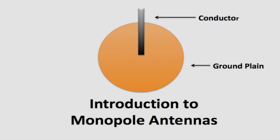Welcome. In today's video, we are going to dive into the fascinating world of monopole antennas. Whether you are a beginner or looking to deepen your knowledge, you are in the right place. We'll explore the key components that make up a monopole antenna and break down the essential concepts like impedance matching, current, voltage, electric fields, magnetic fields, electromagnetic waves, and wavelength. By the end of this video, you will not only understand how monopole antennas function, but also the significance of each element in ensuring optimal performance.